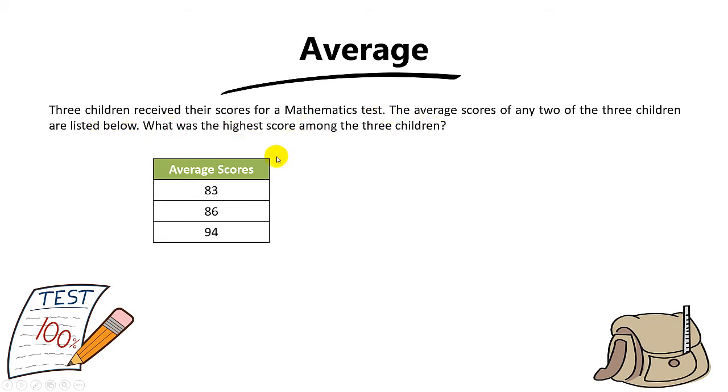So this table shows three numbers, and these three numbers stand for the average scores of any two of the three children.